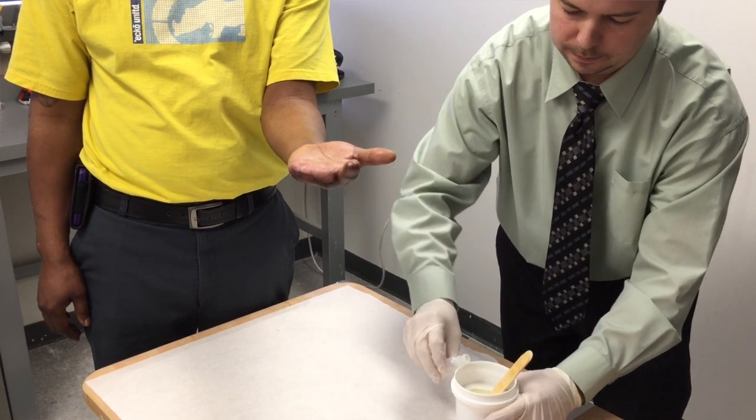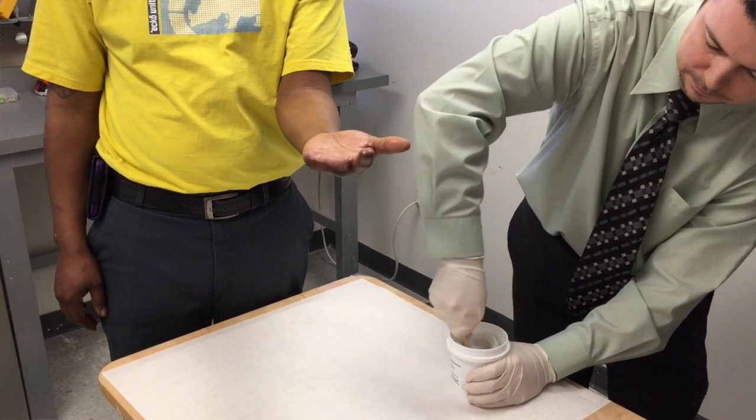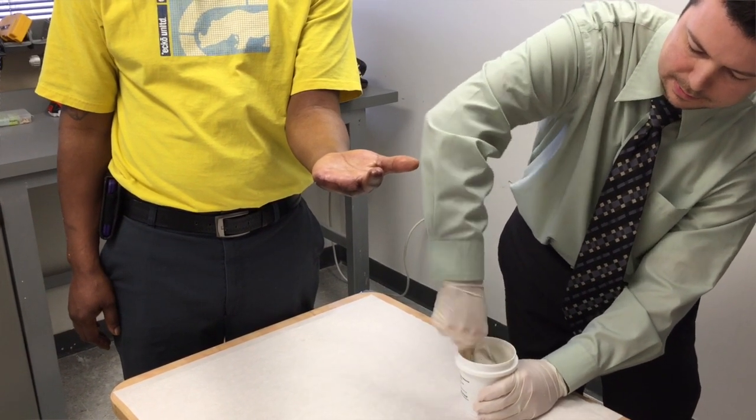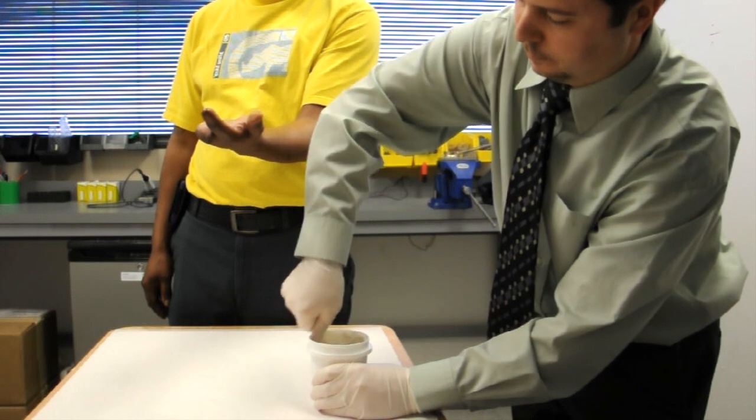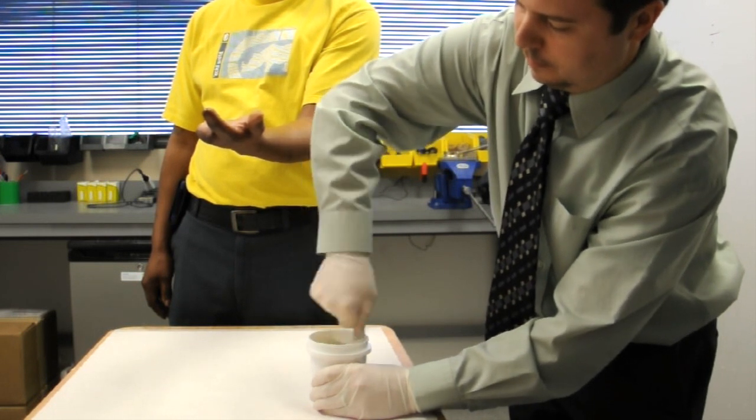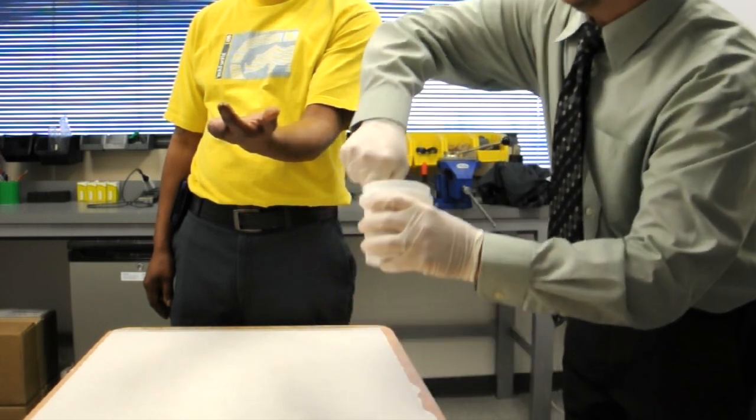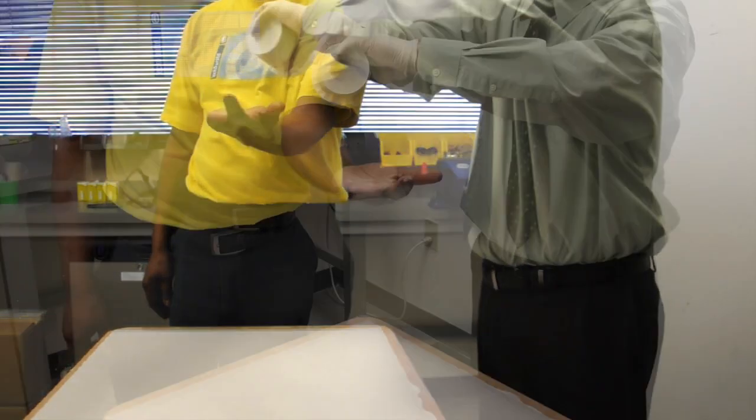I squeeze out most of the catalyst that's in that vial and begin mixing it. At this point, you want to work very quickly—spend about 30 seconds mixing the silicone. It's very important to get it thoroughly mixed. Any silicone that doesn't come in contact with the catalyst will not set, so it's important to take your time and make sure it's thoroughly mixed.